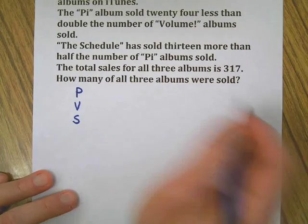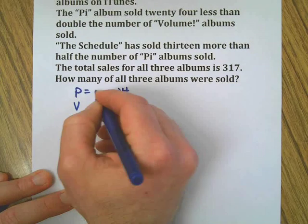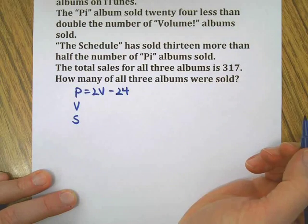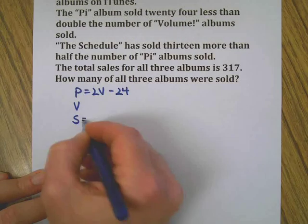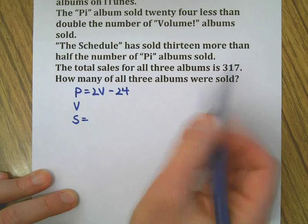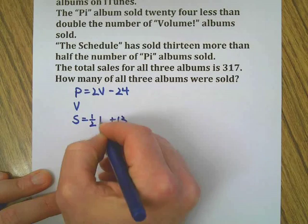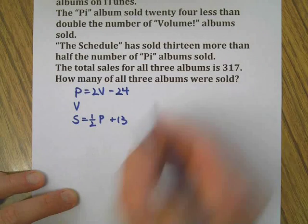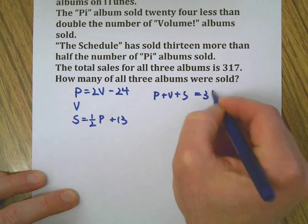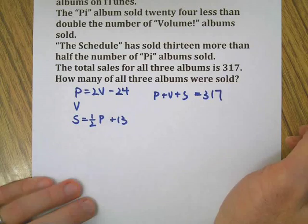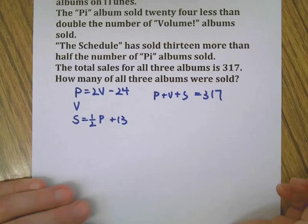Welcome back. Here we go. Let's solve this. Zoom out for a little bit of room here. Pi album, Volume, Schedule. First we need variables for everything. Pi album sold 24 less than double the number of Volume, so P = 2V - 24. Then we have Schedule sold 13 more than half the number of Pi albums, so S = 1/2 P + 13. And that's all we know about this problem other than if we add the three album sales together, we get 317.